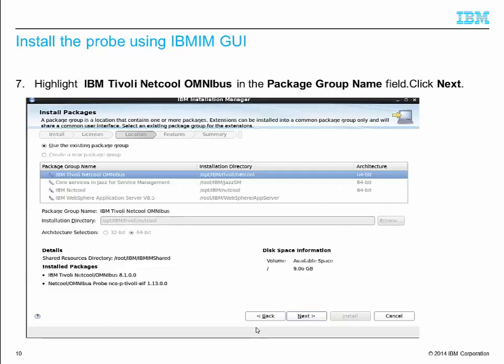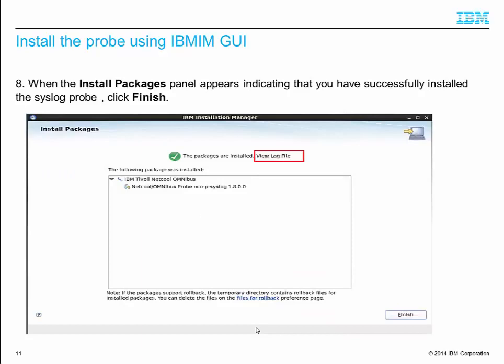All the products installed by the Installation Manager and their installation directories are shown here. You may have other products installed. Here, I have JazzSM WebSphere 8.5 installed. Since I want to install the syslogprobe on Omnibus 8.1, I select the Omnibus 8.1 installation directory, which is the first one. Then click Next.